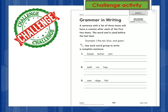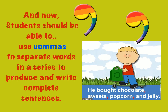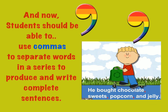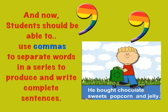This page will be your challenge activity — I will be very happy to read your sentences. I would like to see very creative sentences. You will need to use each word group to write a complete sentence. Make sure to start with a capital letter, end with a period, and use commas between the words plus the word 'AND' to separate the items. This page is optional, Grade 1, but I know you will give it a try. By the end of this lesson, you should be able to use commas to separate words in a series to produce and write complete sentences. Thank you.